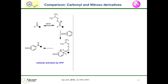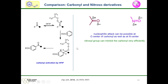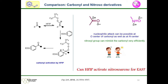Let us compare the carbonyl and nitroso derivatives. Carbonyl can be activated by HFIP for facile electrophilic aromatic substitution. We found that carbonyl and nitroso are very much structurally related, and nucleophilic attack can occur at the carbon centre of carbonyl as well as the nitrogen centre of the nitroso group. So we thought the nitroso group can mimic carbonyl very efficiently. The question is: can HFIP activate the nitroso-arene for electrophilic aromatic substitution like carbonyl?